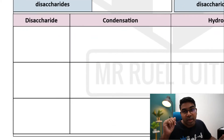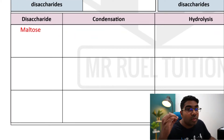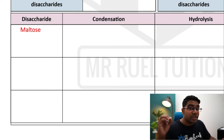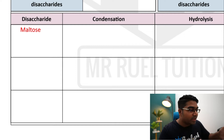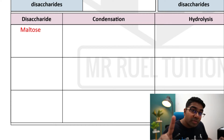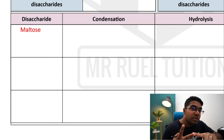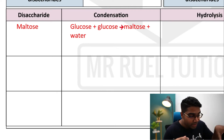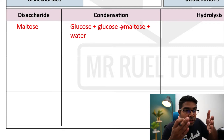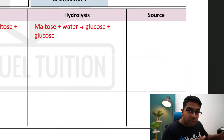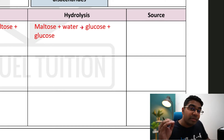There are three types of disaccharides. The first is maltose. Next time you go to the supermarket, look for a malt drink — you'll notice a very unique sweetness. Maltose is formed from two glucose molecules combined by condensation: glucose plus glucose gives maltose and water. This is why it's called condensation — one molecule of water is formed. Hydrolysis is the exact opposite: add water to maltose and you get glucose and glucose. Maltose is typically found in grains.